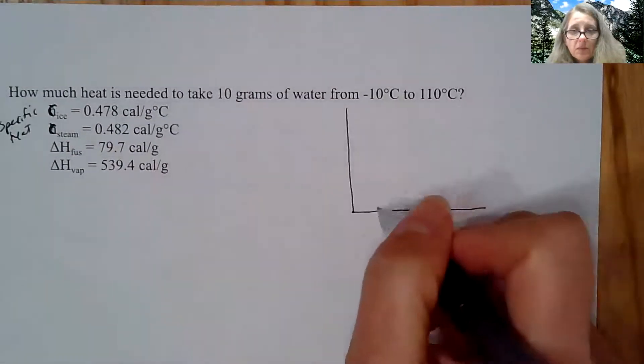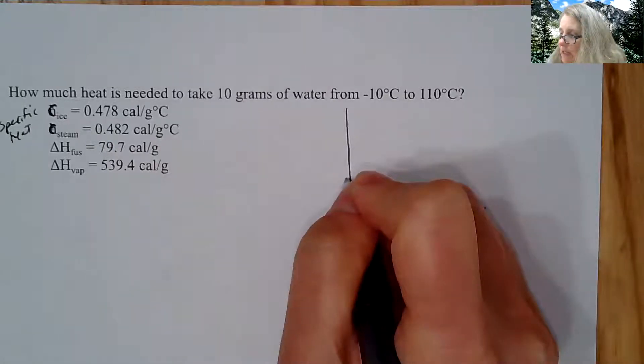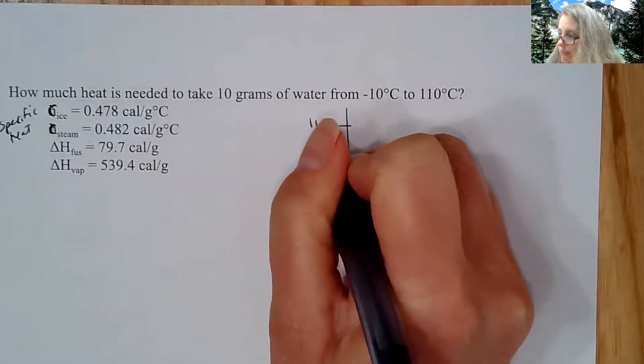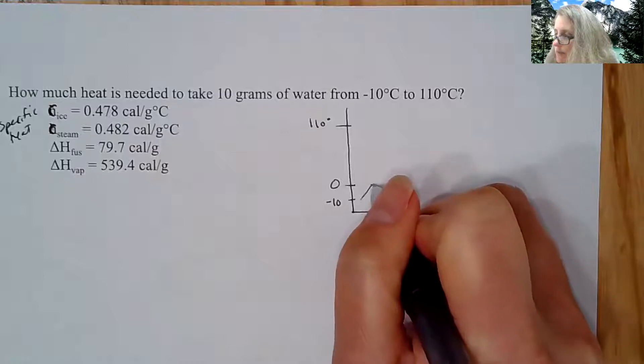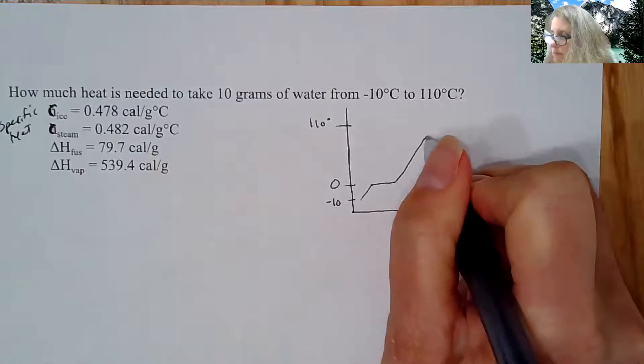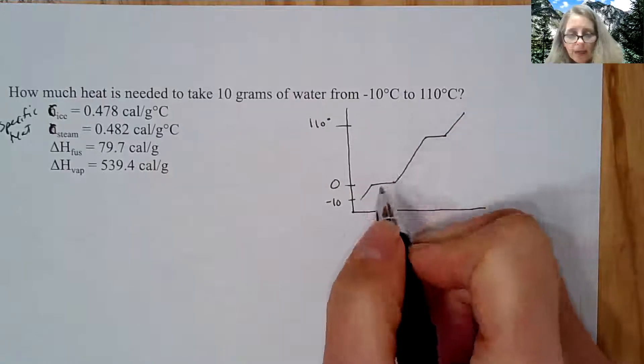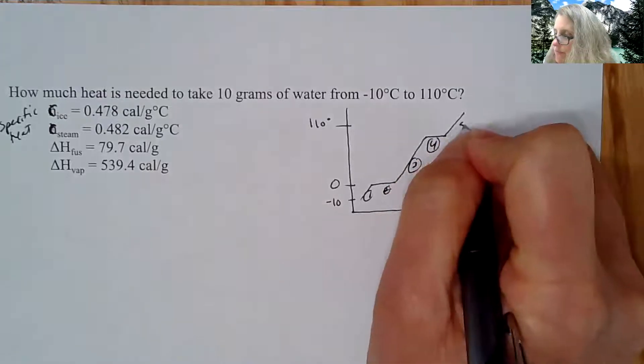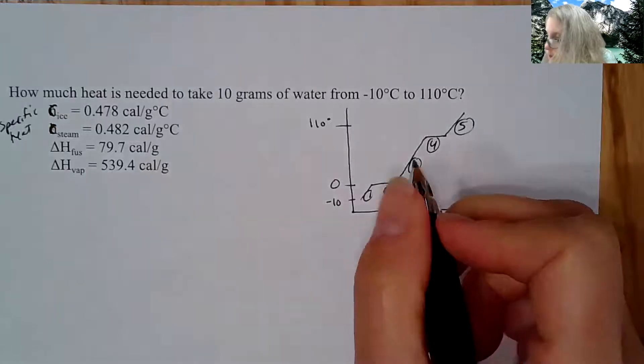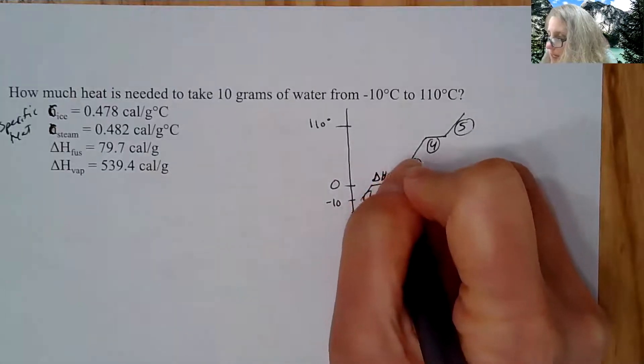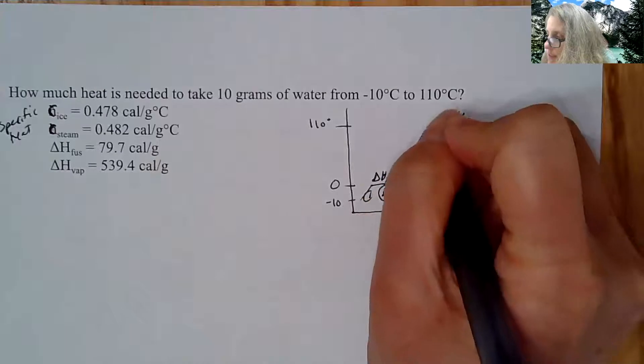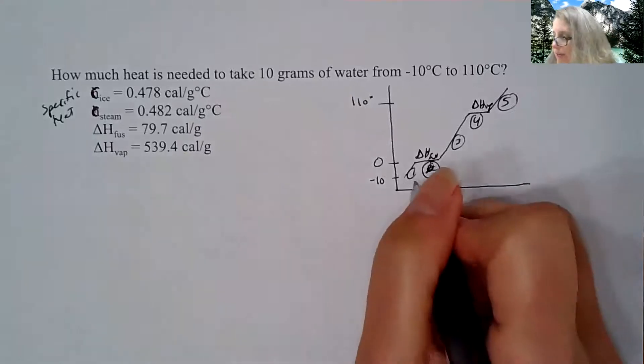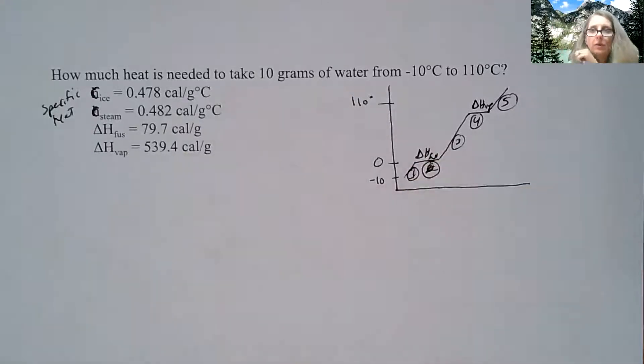So what I'd like you to do for these problems is to kind of draw a graph. So here I have zero degrees Celsius. I'm starting at negative 10 and I'm going all the way up to 110. So if I draw my graph, I will see that I have essentially five different parts of this curve, five different parts of this curve. So there should be a two there. So this is delta H fusion. This is delta H vap. So what I could do is break this down into five separate steps and show you each one of those calculations.